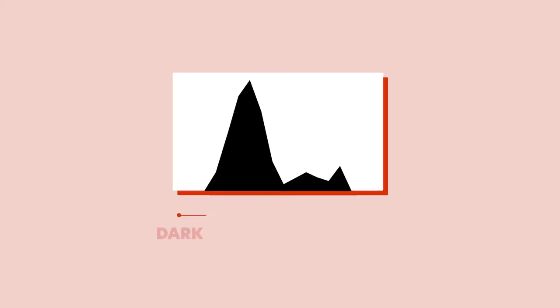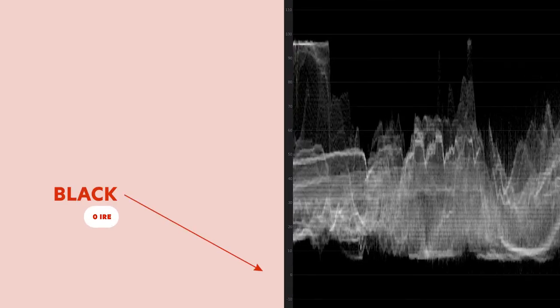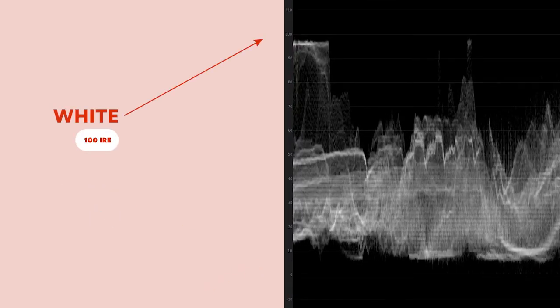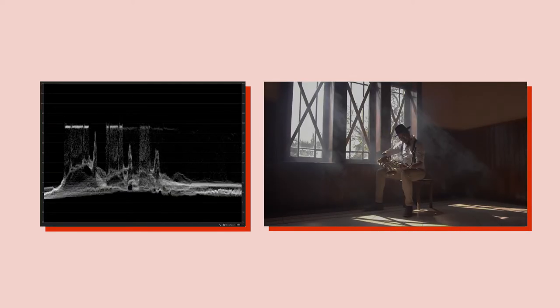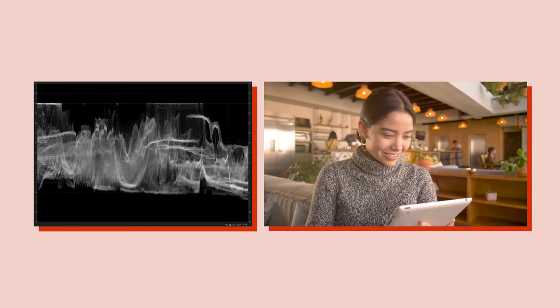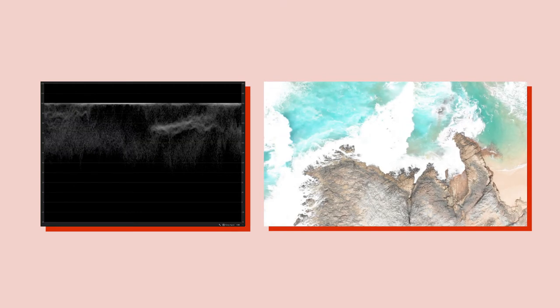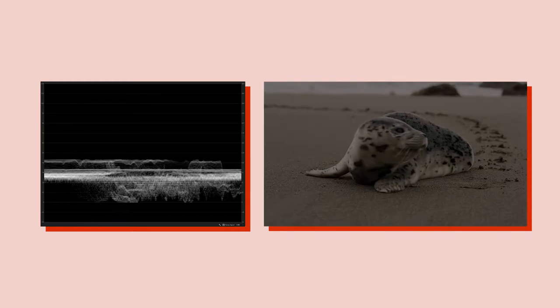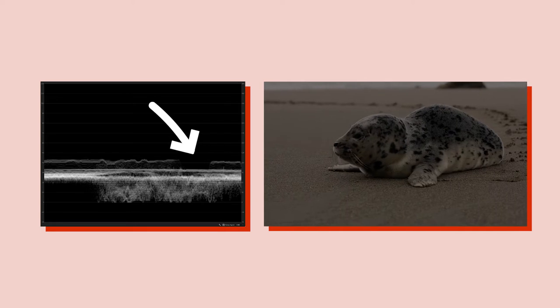Waveforms show you brightness levels just like a histogram, but instead of showing dark to light on the horizontal axis, they show dark to light on the vertical axis — black is at the bottom and white is at the top. If I adjust the exposure to be darker, the waveform goes lower; if I adjust it to be brighter, the waveform goes higher. If exposure is too bright, the waveform is clipped off at the top; if it's underexposed, the waveform is crushed down at the bottom.